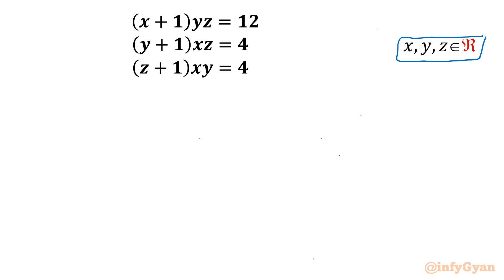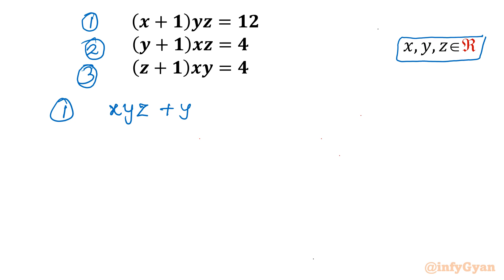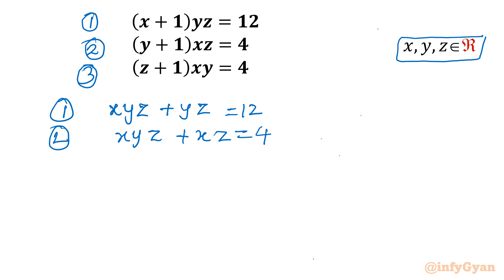Let's get started by considering equations 1, 2, and 3. I will expand each one: equation 1 becomes xyz + yz = 12, equation 2 becomes xyz + xz = 4, and equation 3 becomes xyz + xy = 4.